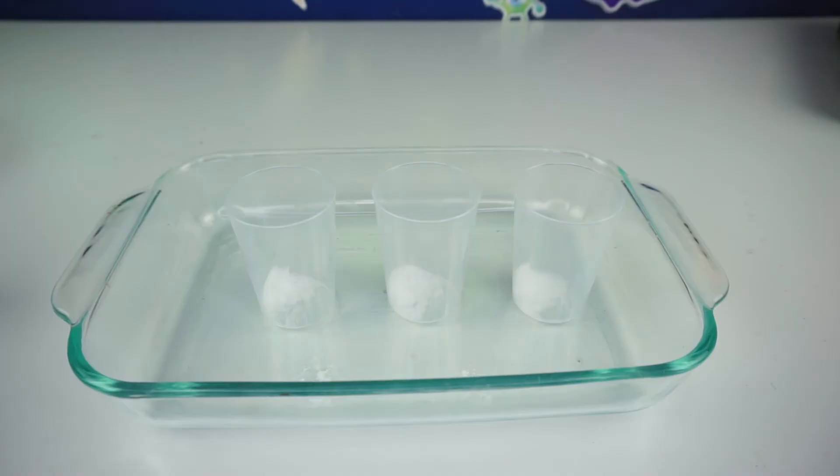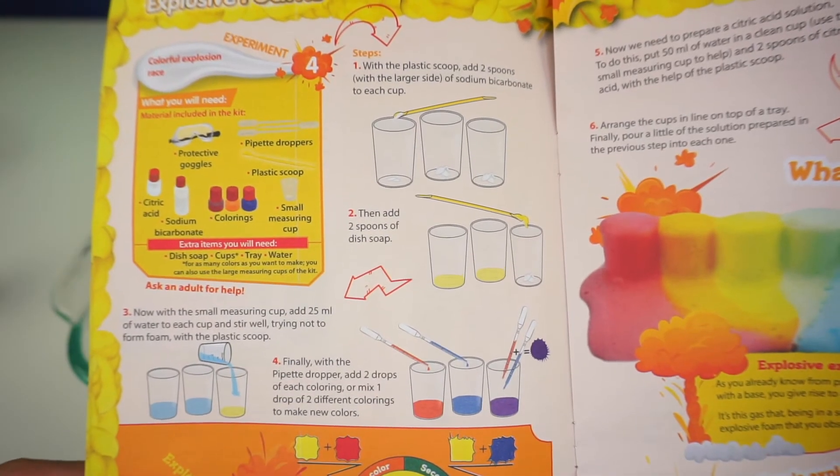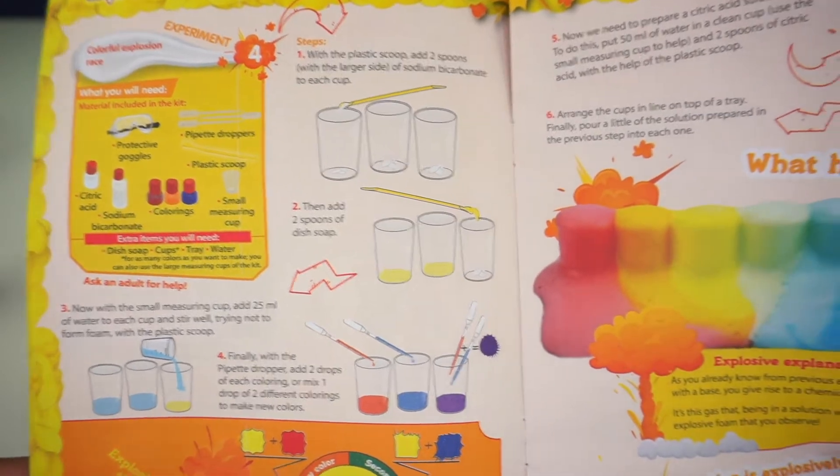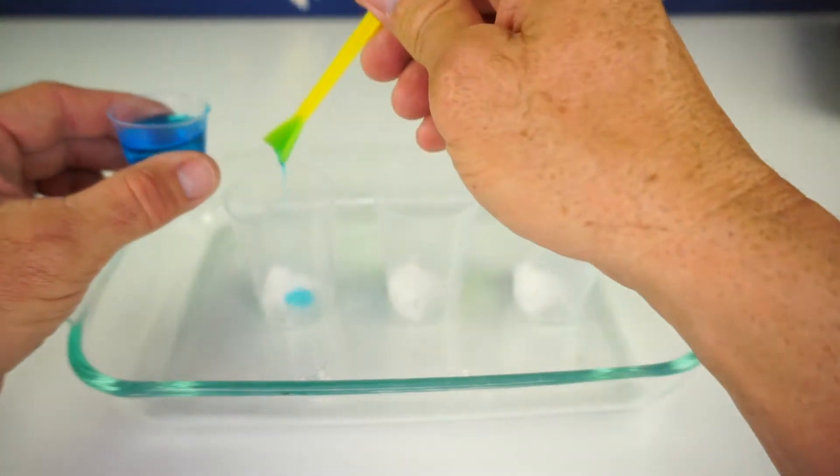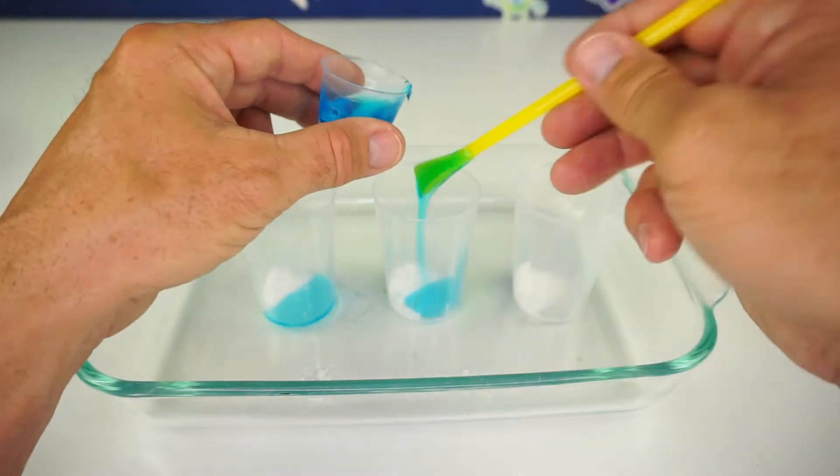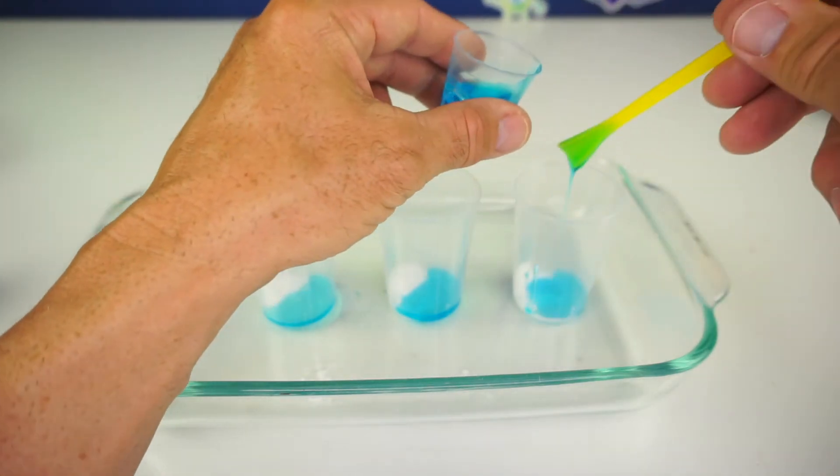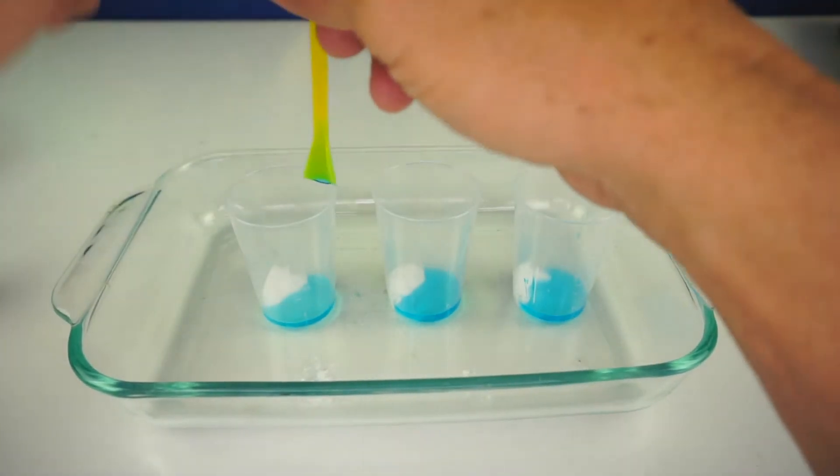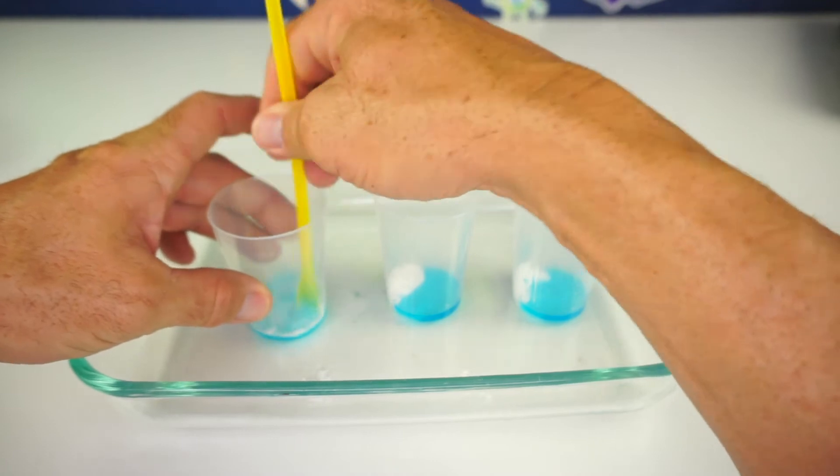Okay, step number one complete. Step number two. Then add two spoons of dish soap to each cup. Alright, let's mix that up a little bit here. Get all the contents together.